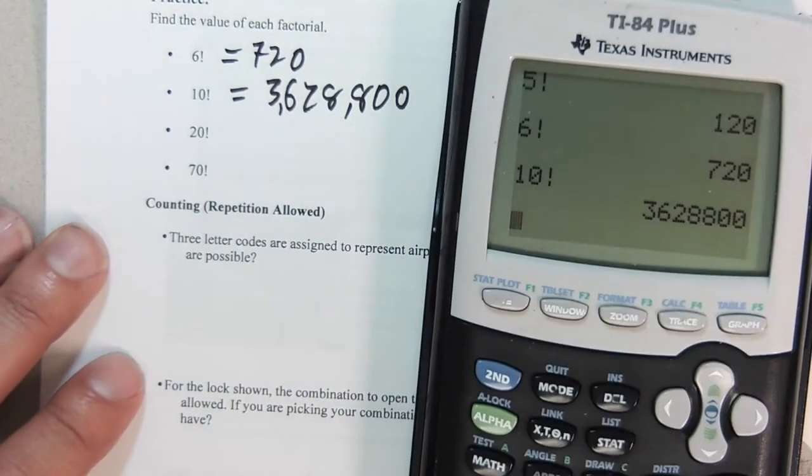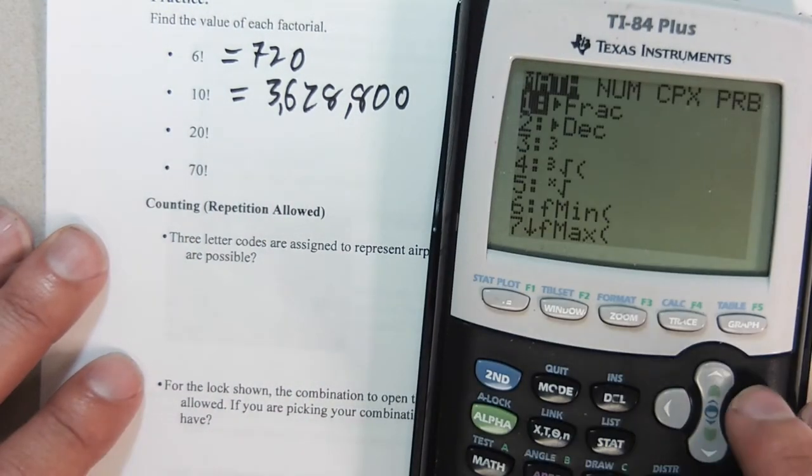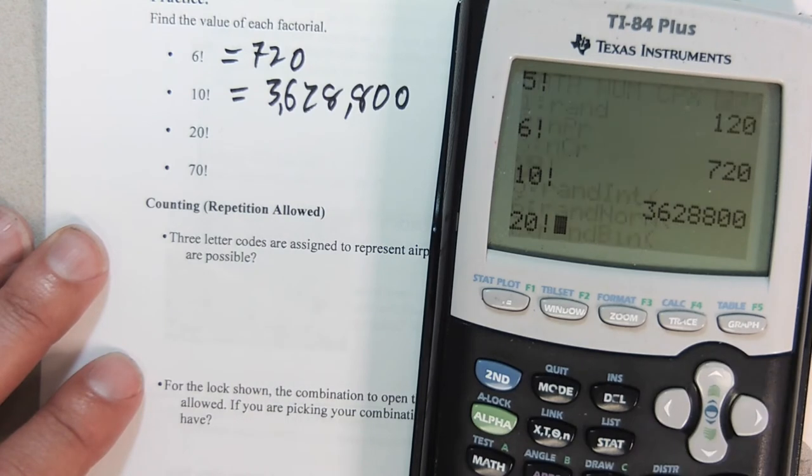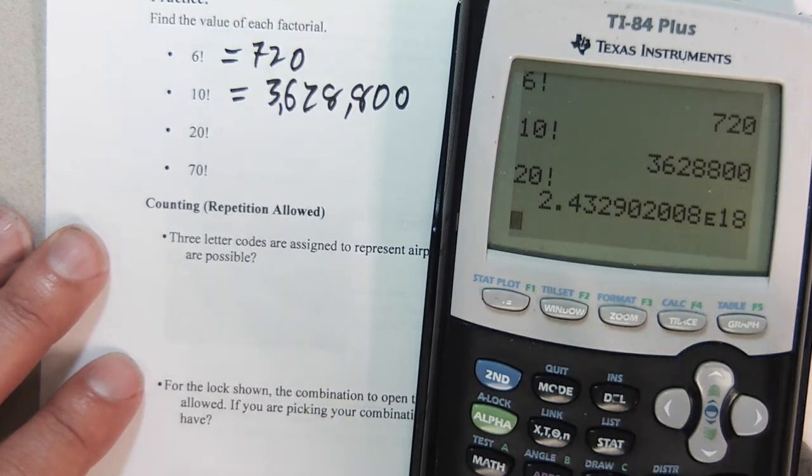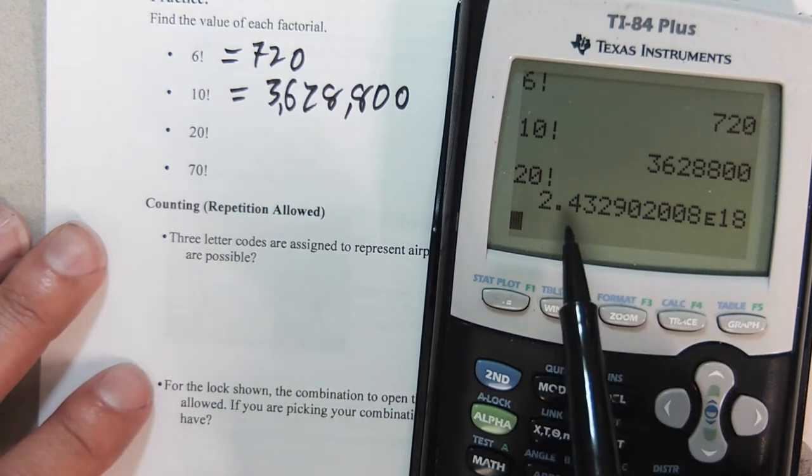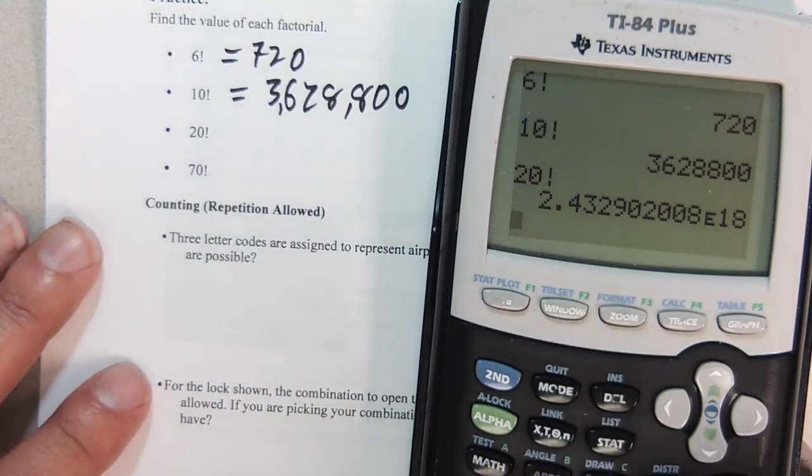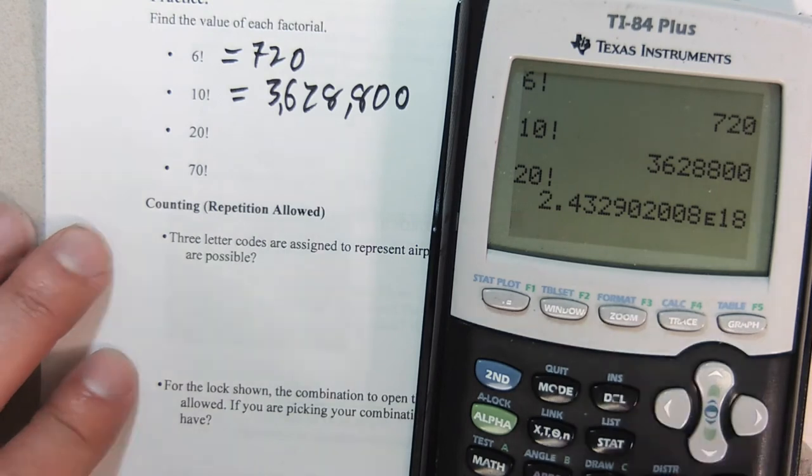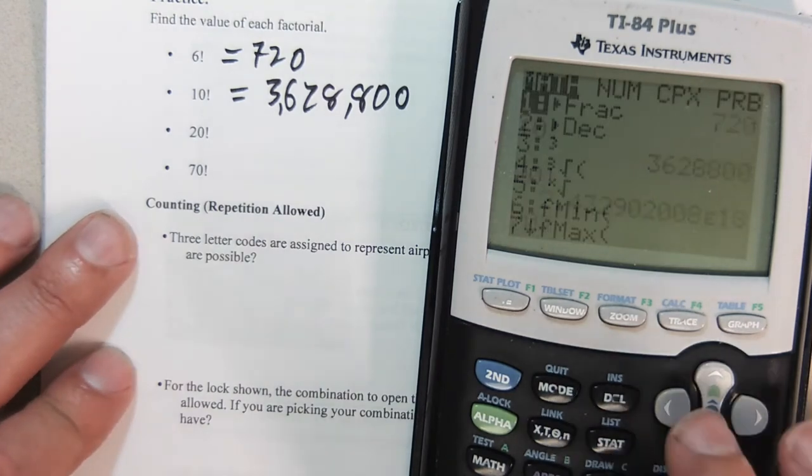20 factorial is going to be even bigger. You can see this is going to get really large really fast. So this is actually 2.43 times 10 to the 18th power. That means I'm going to move that decimal 18 places. I'm not going to write that number down, but you're welcome to.